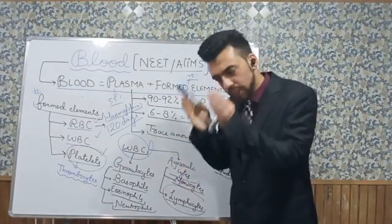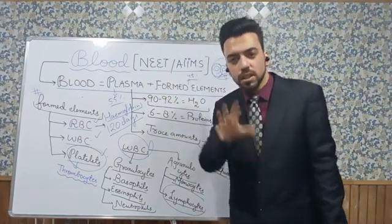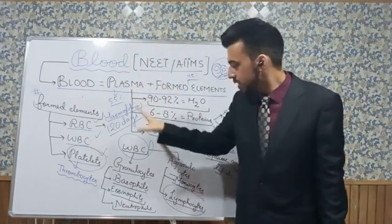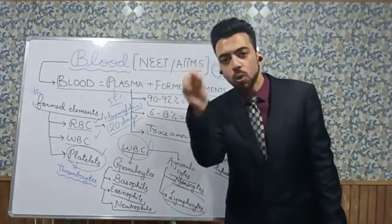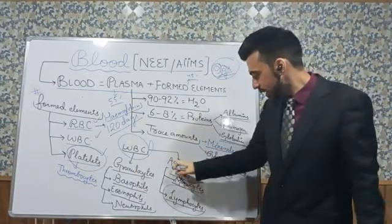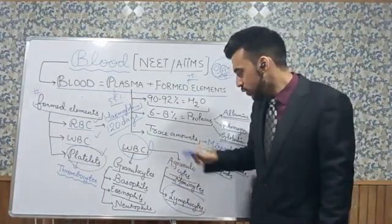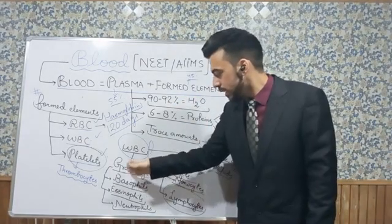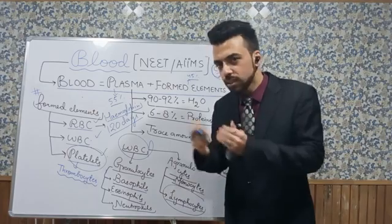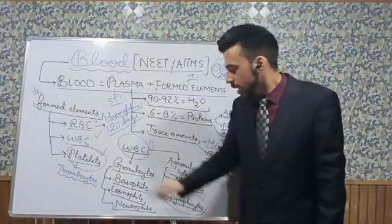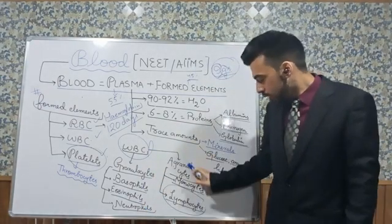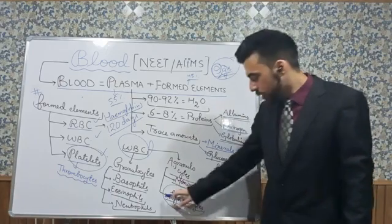The difference between granulocytes and agranulocytes is this: granulocytes have small granule-like depositions in the cytoplasm — just as a clear night sky has scattered stars, similarly these granule-like depositions are scattered in the cytoplasm. Agranulocytes, where 'A' refers to absence, do not have grain-like depositions in the cytoplasm. Granulocytes are of three types: basophils, eosinophils, and neutrophils. Agranulocytes have two types: monocytes and lymphocytes.